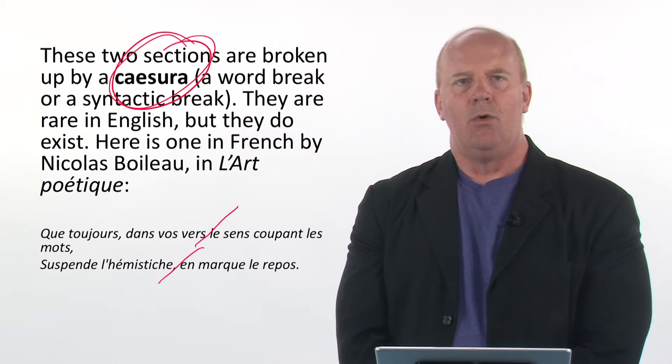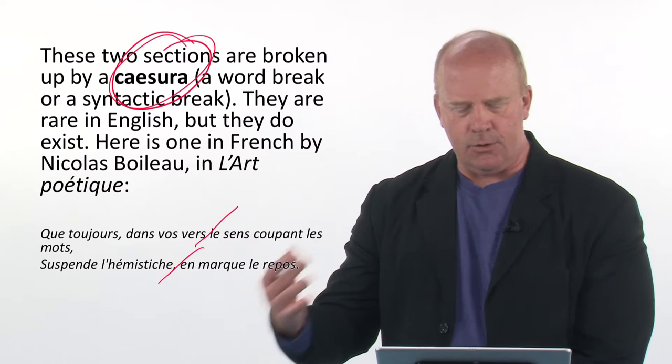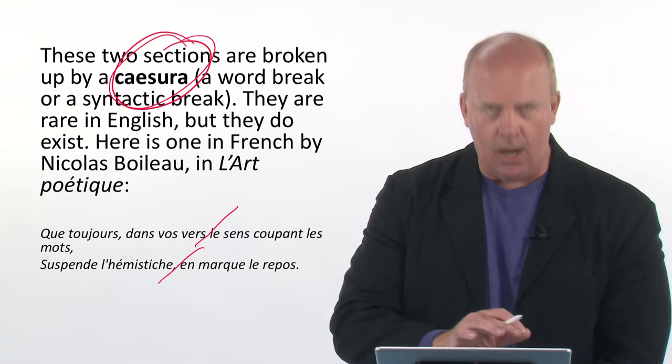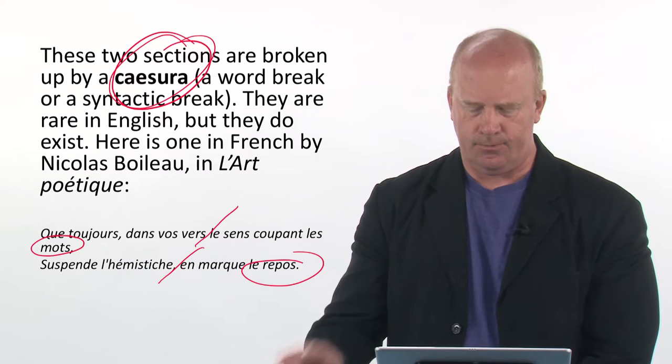Here's one in French by Nicolas Boileau. There's a caesura there — a comma to show the pause. That would be a six and six, with six and six. These two words here are also rhyming.